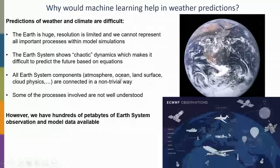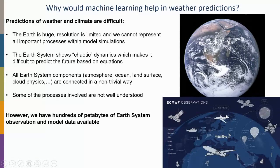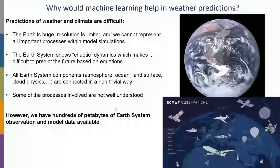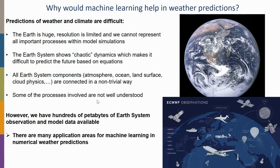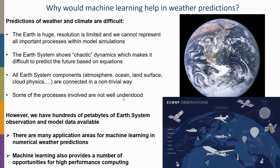On the other hand, we have an enormous amount of observations — 800 billion observations coming into ECMWF every day from all sorts of sources — plus hundreds of petabytes of climate simulation data. Combining this data abundance with the complexity of weather prediction means there are many application areas for machine learning, since ML systems excel at learning nonlinear behavior in complex data.